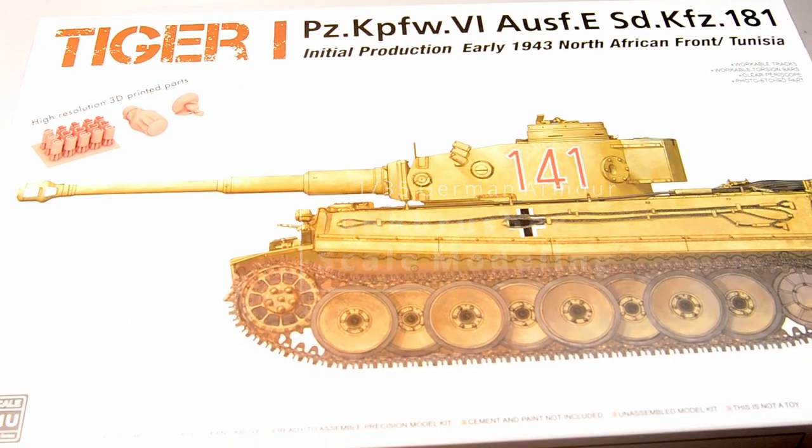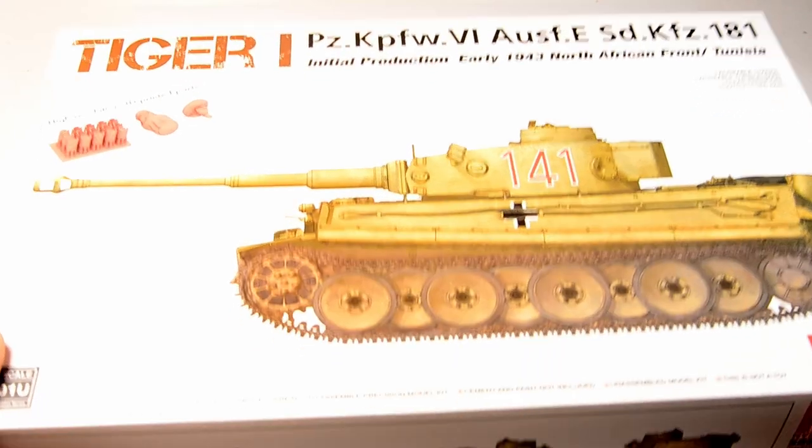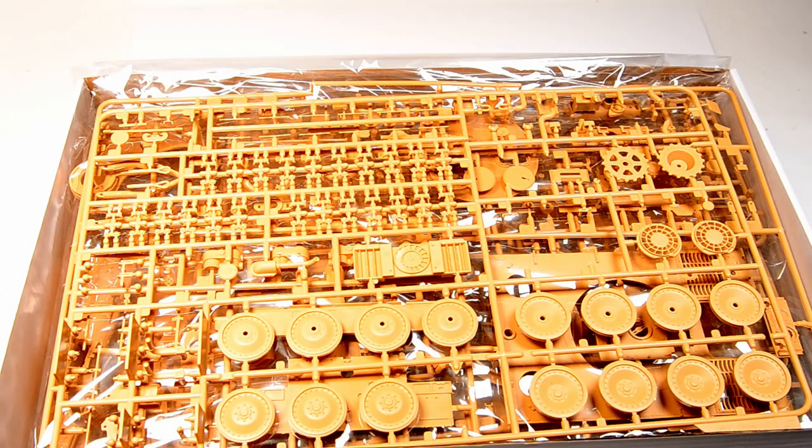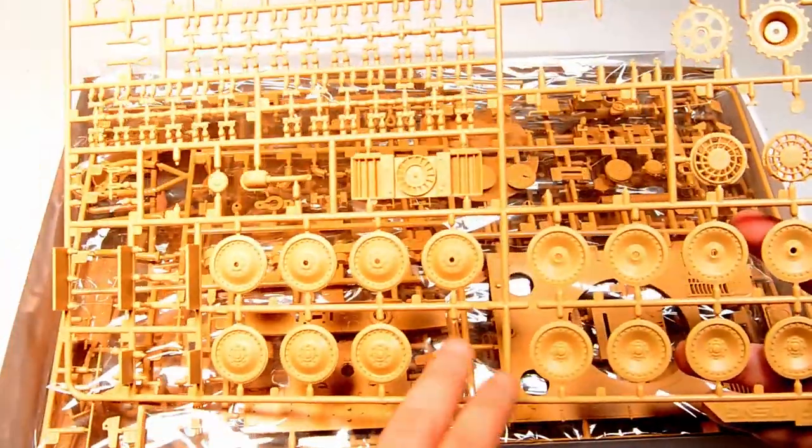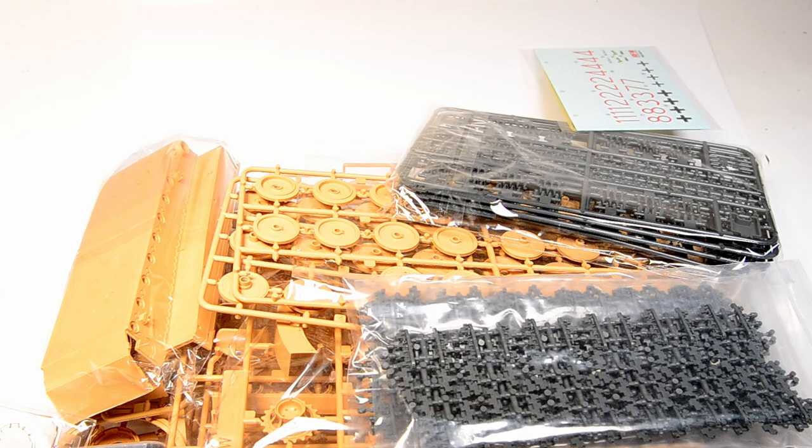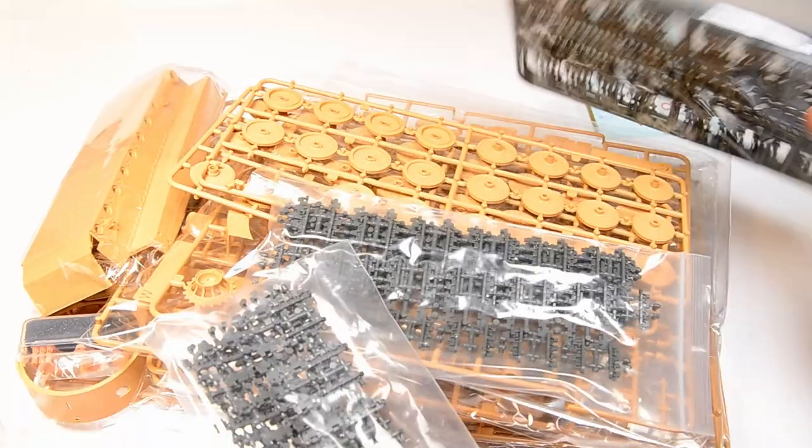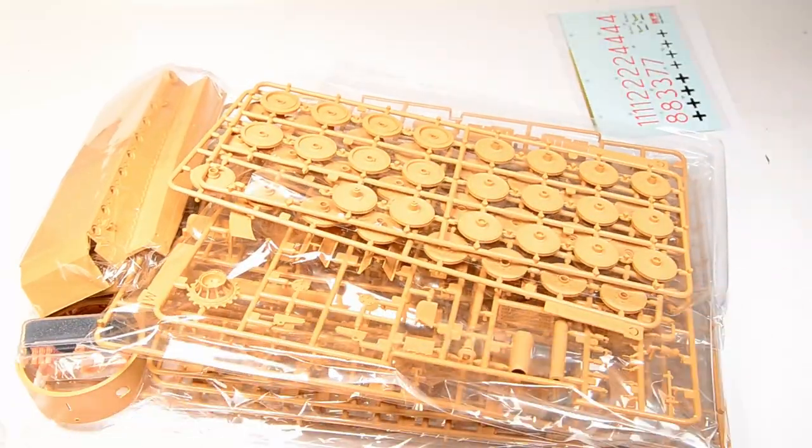Welcome, everybody. This is Rye Field Model's freshly re-released initial production Tiger Tank of the Abteilung 501 in Tunisia. You're watching Tank Brusher, don't forget to subscribe. I don't introduce this vehicle now to full detail, just dumping out the box, diving right into it. You're looking at a two-episode build project. This episode is construction. Next time it will be finished.